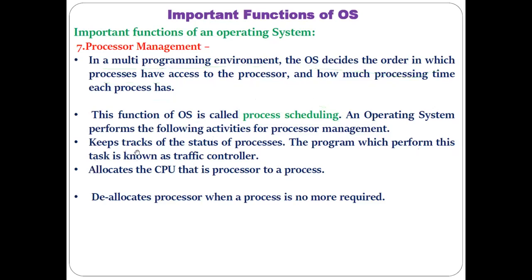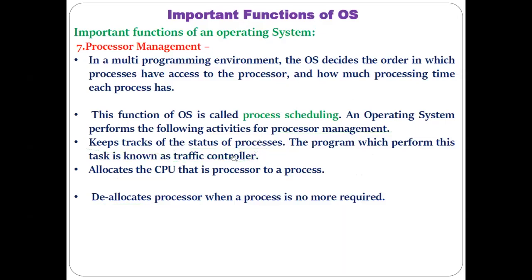The activities performed by the OS for processor management include: keeping track of the status of processes (done by the traffic controller module), allocating the CPU to each process, and deallocating the processor when a process is no longer required — when you close a process, the processor is automatically de-allocated. This functionality is called processor management or process scheduling.